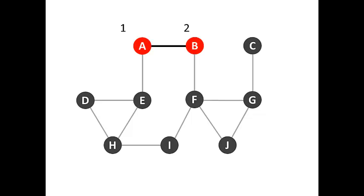Since we discovered vertex A, we give it a discovery time of 1. We give vertex B a discovery time of 2, go to vertex B, and paint it red. Then we look at B's outgoing edges — B has only one edge going to vertex F. So we give vertex F a discovery time of 3 and paint F red. Then we look at F's edges going to undiscovered vertices, and we can see there are 3: G, I, and J. G comes first alphabetically, so we'll go to vertex G, paint it red, and give it a discovery time of 4.